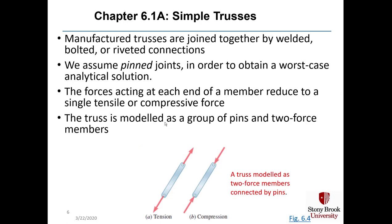Actual manufactured trusses are joined together by welded, bolted, or riveted connections. In our analytical modeling we assume pin joints for two reasons: first, it's the weakest of all possible joints and gives a worst-case analytical solution — if the truss can survive that worst case, the actual manufactured truss will not have a problem. Second, using the assumption of pin joints allows us to get analytical solutions using equations of equilibrium to calculate forces at reactions and in each element.